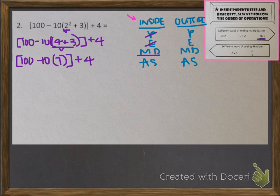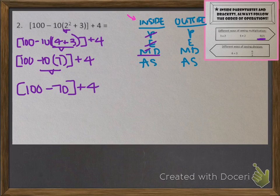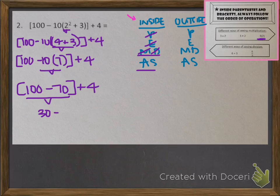There are no more exponents. Now I'm looking for multiplication and division within the brackets. The 10 right next to the 7 in parentheses means to multiply, so I do that next: 100 minus whatever 10 times 7 is — that's 70 — then plus 4. I don't see any more multiplication and there is no division, so I cross those off. Now looking for addition and subtraction inside the bracket: I see subtraction, so 100 minus 70 is 30, and then plus 4 at the very end.